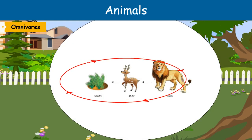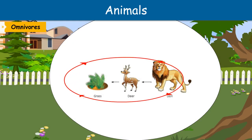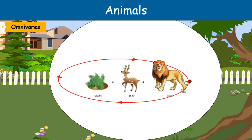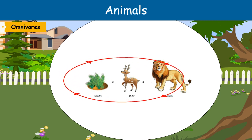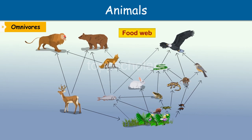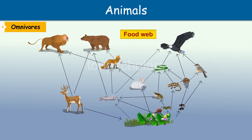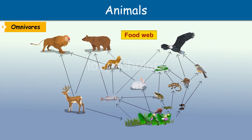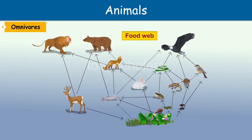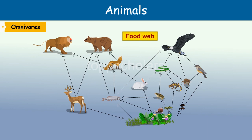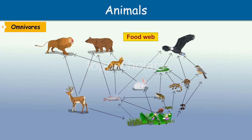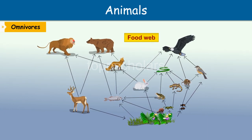Grass is eaten by the deer, and the deer is eaten by the lion — this is called a food chain. Every food chain starts with a plant. Food chains can be complicated and can form a network, which is called a food web.